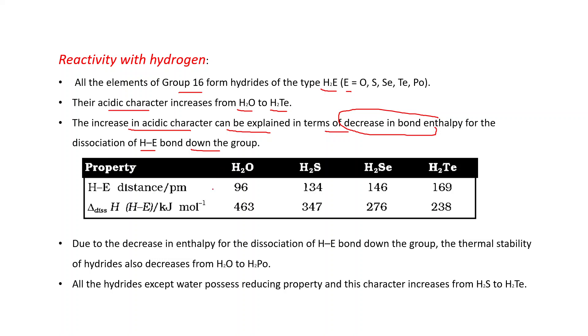From this table, you can see, if you go from H2O to H2Te, bond length increases. That is why bond dissociation enthalpy decreases from H2O to H2Po.